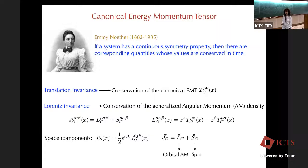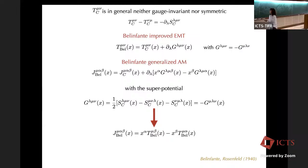Starting from your Lagrangian and applying translation invariance, you end up with this conserved tensor called the canonical energy-momentum tensor. However, this canonical tensor is in general not gauge-invariant and not symmetric. There is a standard procedure called the Belinfante procedure which allows you to go from the canonical energy-momentum tensor to a symmetric one called the Belinfante energy-momentum tensor.